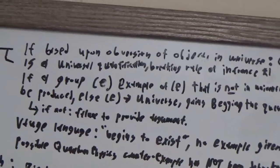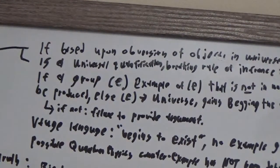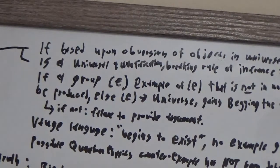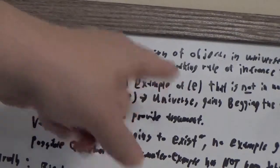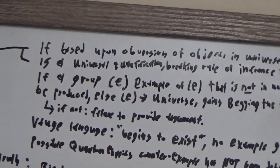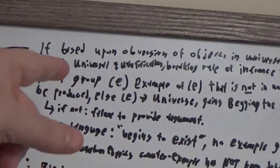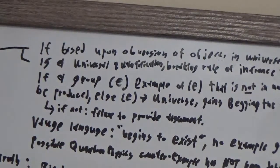And if you're saying that this is actually a group, that whatever is a group E, then you have to give an example of things that begin to exist that are not also the universe. If you can't produce that, you fail to provide an argument.